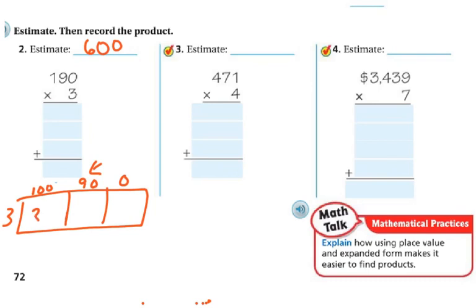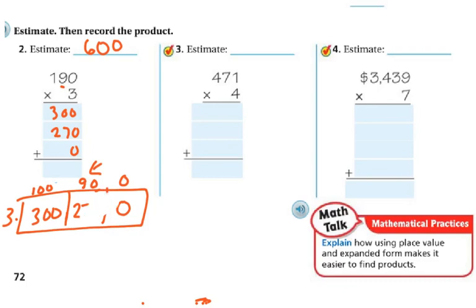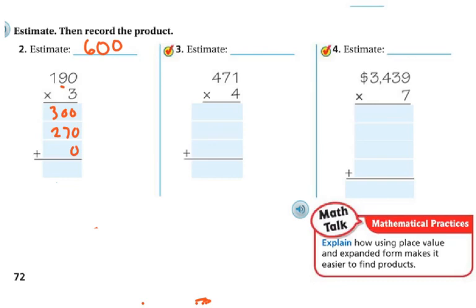So in this problem, I'm going to do 3 times 100, which is 300. Now I'm going to multiply times my tens place, and 3 times 90 is 270 — because 9 times 3 is 27, and then I add my 0. And then in my ones place I've got nothing, so 3 times 0 is 0, because any number times 0 is 0. So I add my 270 here, and 0 here. So 0 plus 0 plus 0 is 0; 0 plus 7 is 7; and 3 plus 2 is 5. So my answer is 570, which is very close to 600.